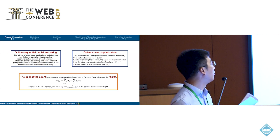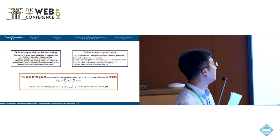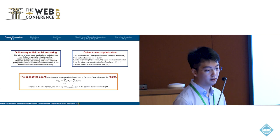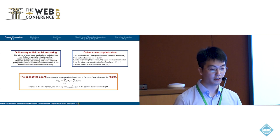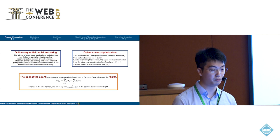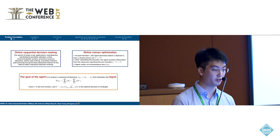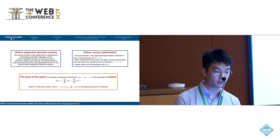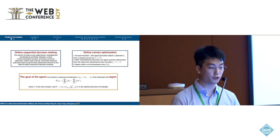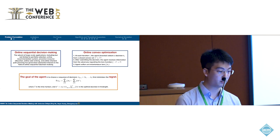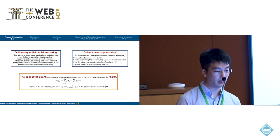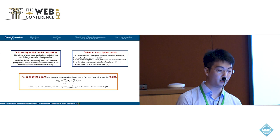In our work, we model online sequential decision making as a framework of online convex optimization. At each iteration, the agent selects a decision X sub T from a closed convex set. After submitting the decision, the agent receives information from the adversary regarding the loss function F sub T, and the agent suffers an instantaneous loss. The goal of the agent is to choose a sequence of decisions that minimizes the regret — the difference between the loss incurred by the agent's sequence of decisions and the losses incurred by the optimal decision in hindsight.